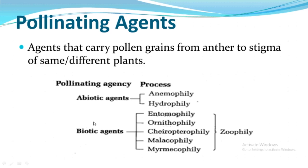These agents are of two types: abiotic agents and biotic agents. Abiotic agents means non-living agents. And biotic agents are living organisms, like insects, birds, and bats. Abiotic agents are of two types: anemophily and hydrophily.